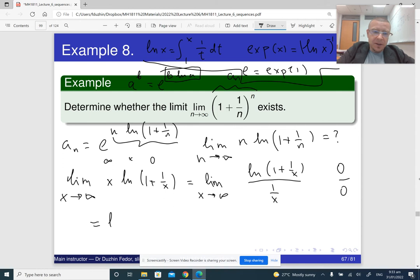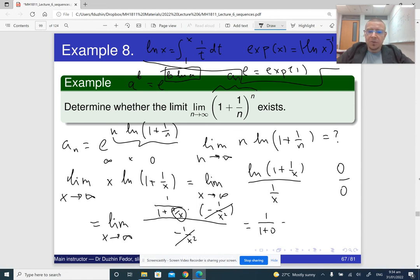So applying L'Hôpital's rule, we see that this is the limit as x goes to infinity of, I've got to differentiate, so let me just try the big fraction. When I differentiate the ln function, I get 1 over 1 plus 1 over x times the derivative of 1 over x, which is minus 1 over x squared. And the denominator is just 1 over x, so its derivative is minus 1 over x squared. All right, and now these two cancel out, and the remaining part is just, well, so here we have 1 over x and it approaches 0. So it goes to 1 over 1 plus 0, which is just 1.